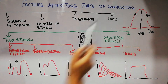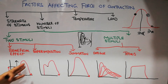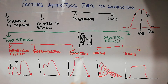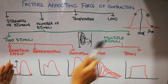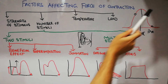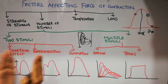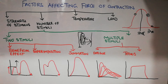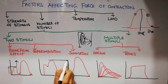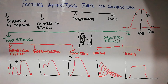In the third form, known as summation, the second stimulus is applied during the contraction phase itself — the muscle has contracted and during that contraction phase the second stimulus is applied. This produces just one combined graph, but the force of contraction or strength is far greater than either individual contraction alone.